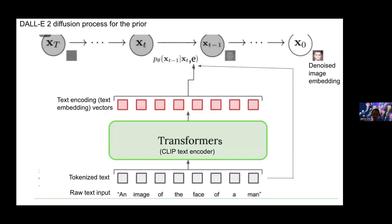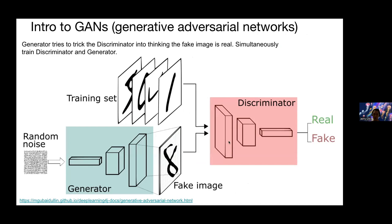Going back to the reverse diffusion process in DALL-E 2: it's similar to Imagen, but one difference is that they're also feeding in the text tokens themselves in addition to the text embeddings as part of the condition — just in case some information was lost in the embedding process. Most of the important information should be contained in the embeddings, but including the text tokens might help a little bit.